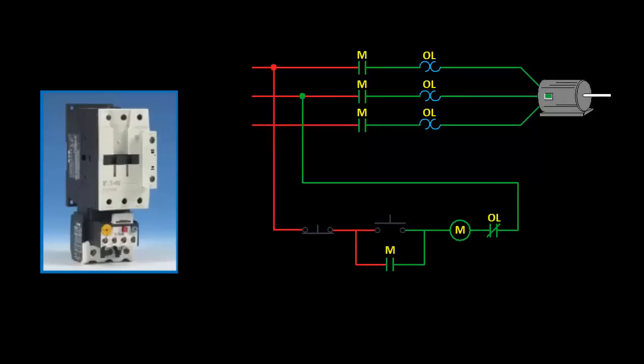To reset the contacts after a trip, we can have it set to either manual or automatic mode. If we have it set to manual, then the reset button on the overload would have to be pressed first, and then the motor can be restarted by pressing the start button.